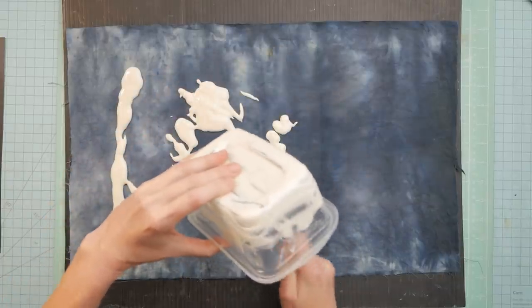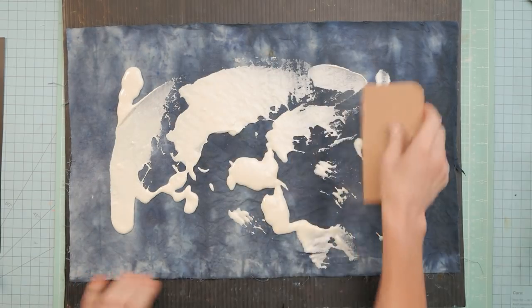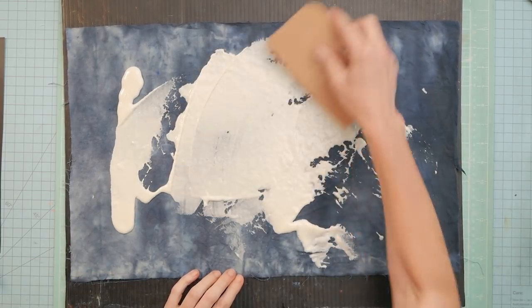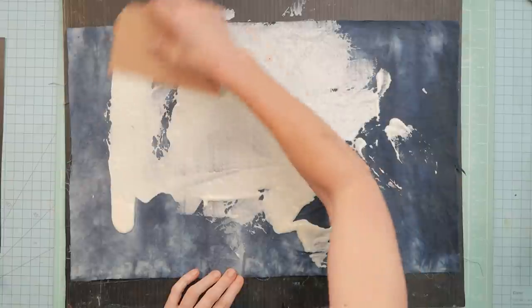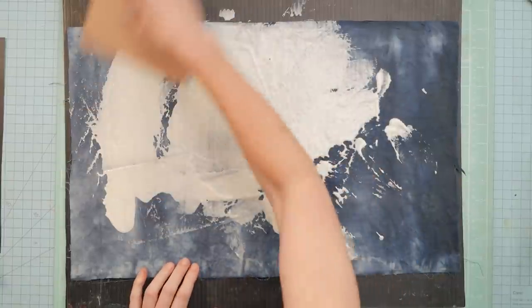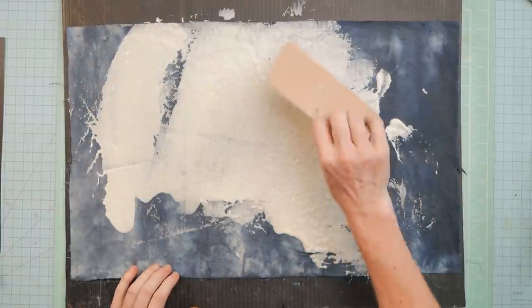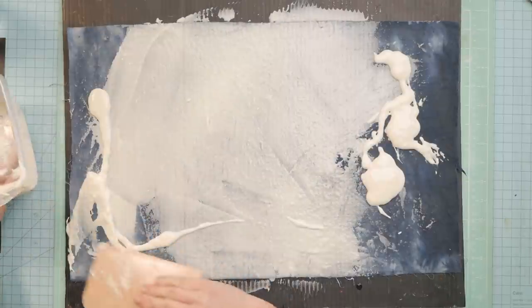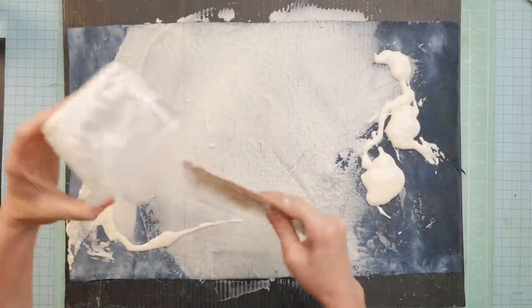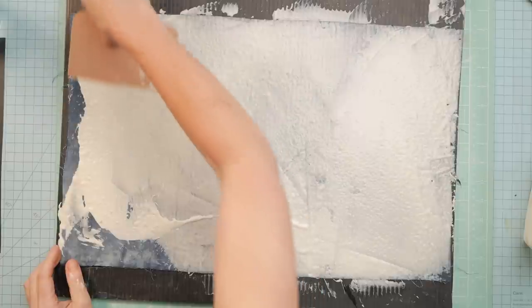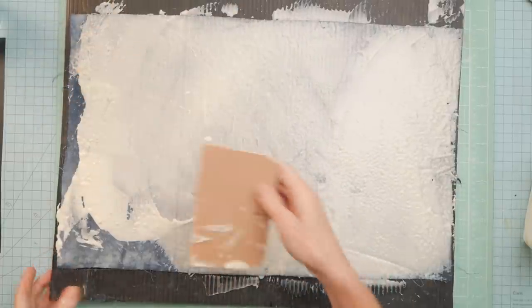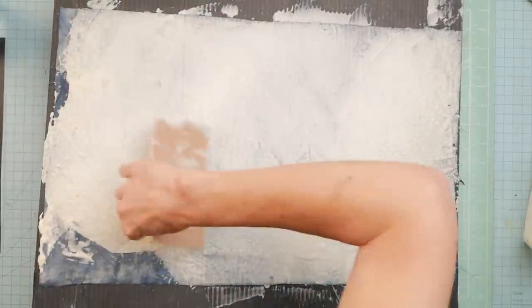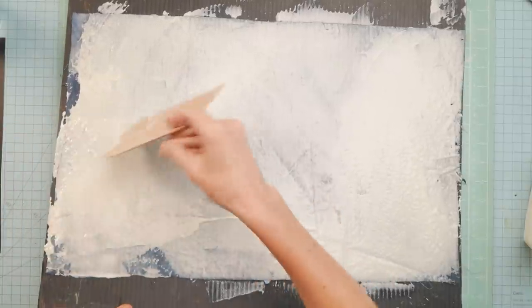So as you can see, I am smearing on a paste. And all this paste is, is flour and water. And I mixed probably half and half, and I just mixed it up with a fork. And then I think it was too thin. So I added some more flour because I wanted it to be, let's say like a waffle batter thickness.